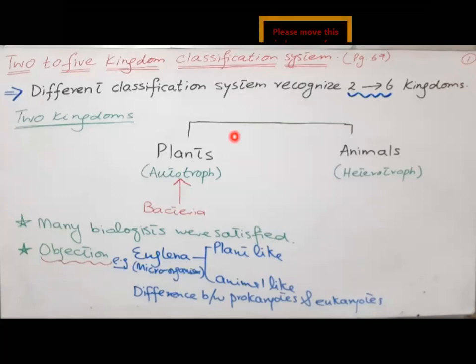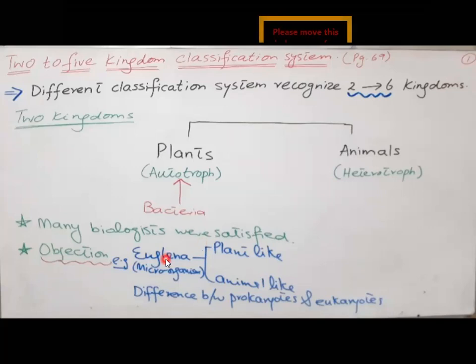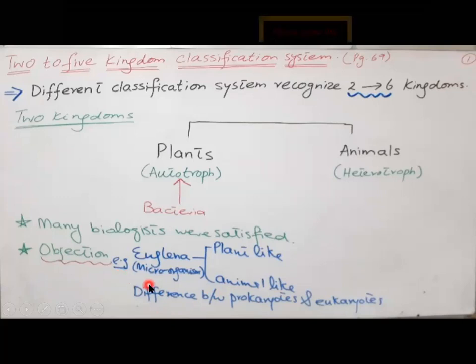In the two kingdom system, bacteria were also included in the plants because there are many bacteria which are autotrophs. This system persisted for many centuries and many biologists were satisfied with it. But after some time, by the advancement of microscopy and several techniques which revealed the cell structure, there was objection number one: that there are some microorganisms just like Euglena — it is plant-like as it contains the chloroplast, it is animal-like as it can move, and it can become heterotrophic at several times.